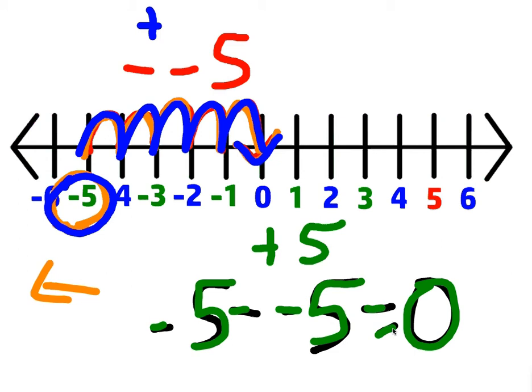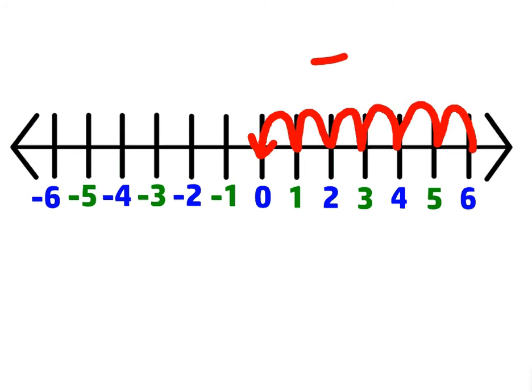If it confuses you, you can go back and look at the number line example and do some more examples on your own, because sometimes we look at numbers and symbols in math and we get confused. And that's okay, because we're human.